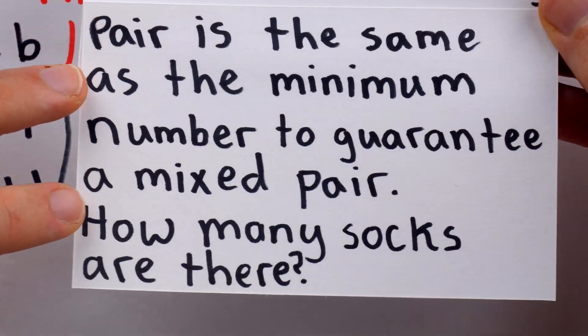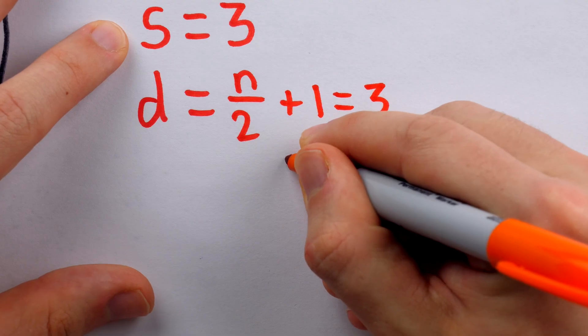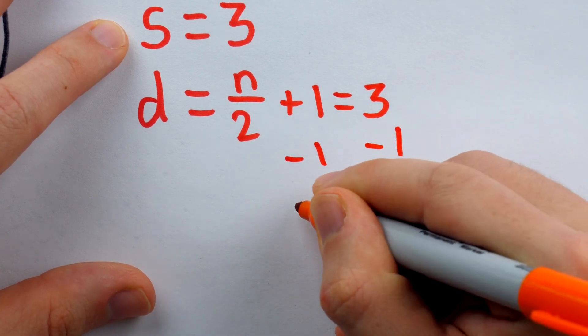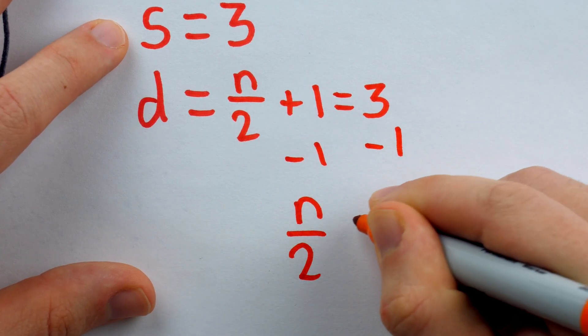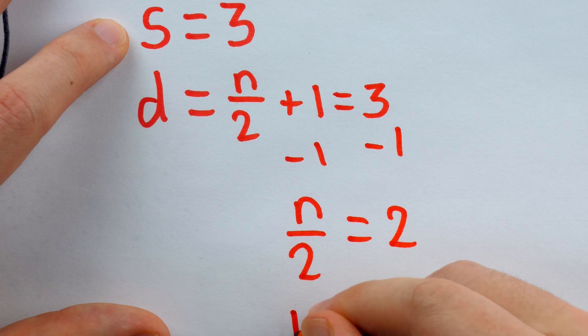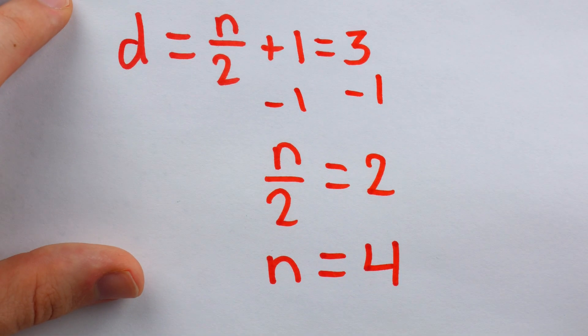So, using that equality, we can now very easily solve for N. Subtract 1 from both sides, and we have that half of N is equal to 2, and thus N, the total number of socks in the drawer, is equal to 4.